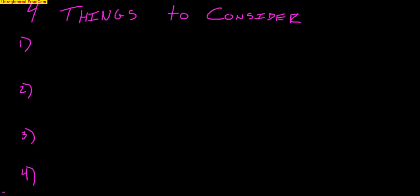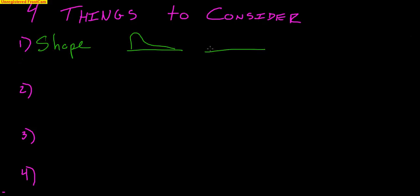There are four things to consider when you're analyzing data. You definitely want to consider the shape of the data. Skewed right means a lot of data on the left, very little data on the right. Skewed left would be a little bit on the left, a lot of data on the right. And then we also talked about nice symmetric or mound-shaped data.